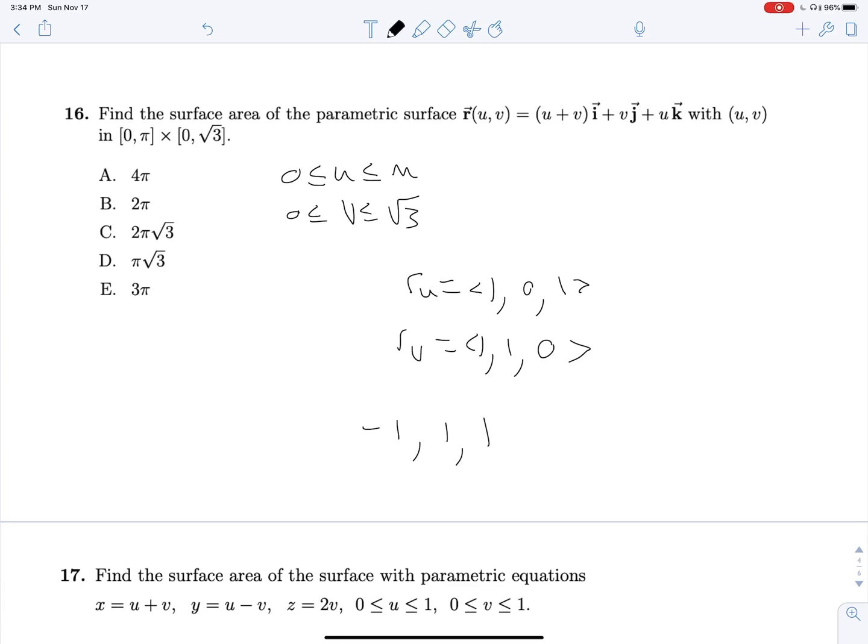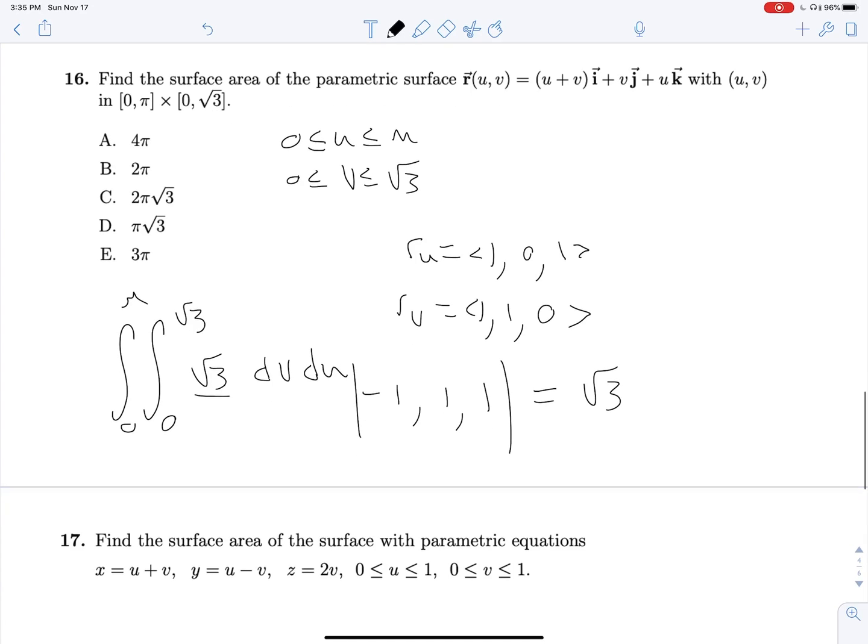Since we're actually doing a surface integral, we're not looking for RU cross RV. We're looking for the magnitude of RU cross RV. And this is, of course, going to be root three. So now moving forward, we're just in a normal rectangular integral. Zero to root three, DV, zero to pi, root three, DU, and then root three as our integrand. And since we're not dependent on U and V in here, all we have to do is multiply these two guys in, and we'll get three pi, which is our answer.